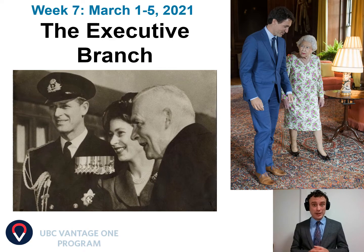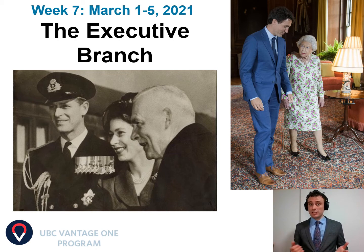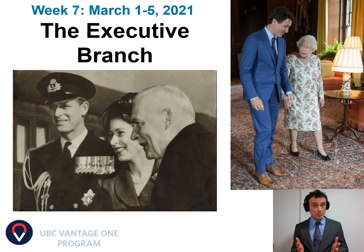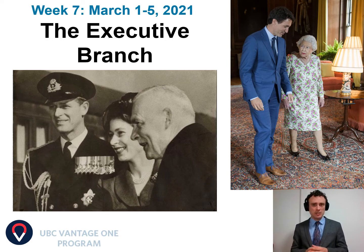The topic this week is the executive branch. On this slide, we see two photos of Queen Elizabeth II with Canadian Prime Ministers. The first photo, from 1951, shows Queen Elizabeth when she was Princess Elizabeth, about a year and a half before she assumed the throne, pictured with Prince Philip and the Canadian Prime Minister at the time, the Honorable Louis Saint Laurent. The other photo is of Queen Elizabeth II with the current Prime Minister, her 12th Prime Minister, Justin Trudeau. What is the relationship between the Queen of England and the Canadian Prime Ministers? Who has the power in the executive branch? What is the relationship between these individuals and the Governor General? We'll explore these topics today as we accomplish four different learning objectives.